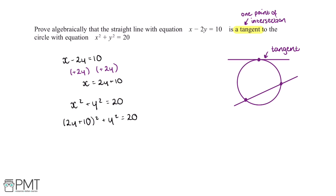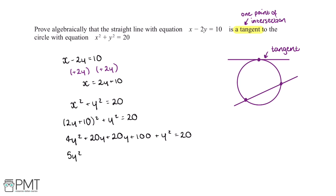Now we need to expand out this equation and then make it equal to 0. Expanding the 2y plus 10 squared gives us 4y squared plus 20y plus 20y plus 100, plus y squared, equals 20. Collecting all the like terms gives us 5y squared plus 40y plus 100 equals 20.